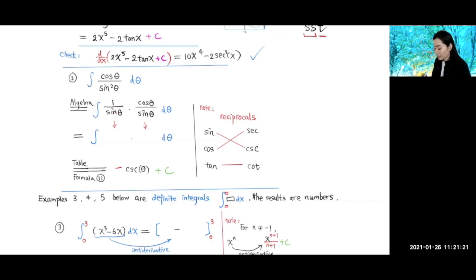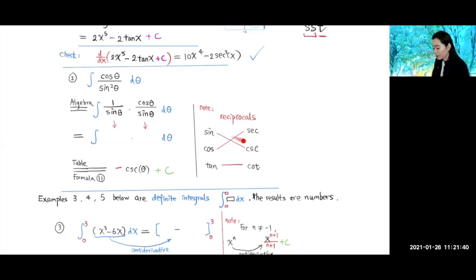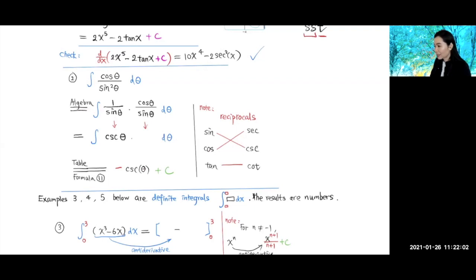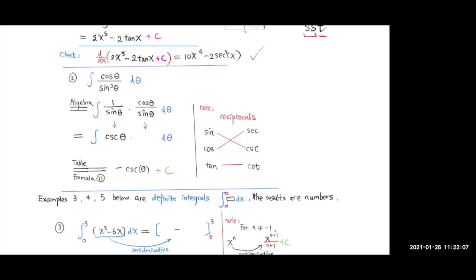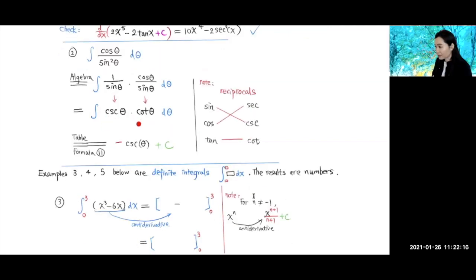What's one over sine theta? Let me teach you a trick to remember: sine, cosine, tangent, secant, cosecant, cotangent. The reciprocal of sine is cosecant; the reciprocal of cosine is secant; the reciprocal of tangent is cotangent. So one over sine theta is cosecant theta. And cosine theta over sine theta is cotangent theta — that's one over tangent.